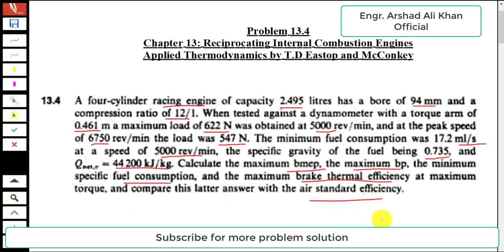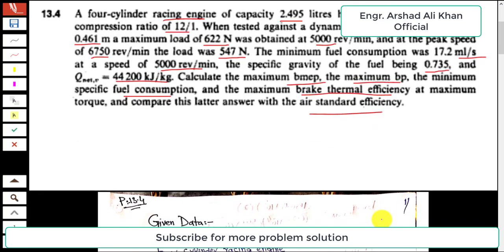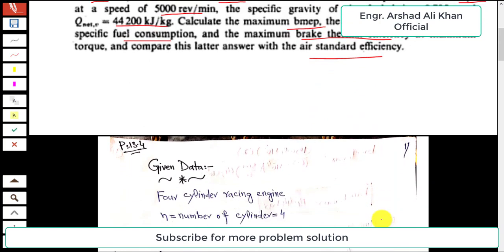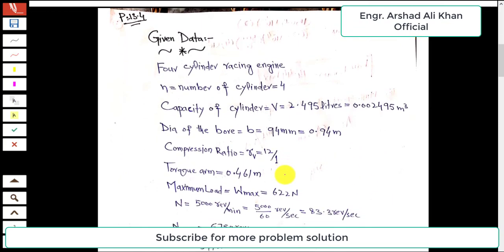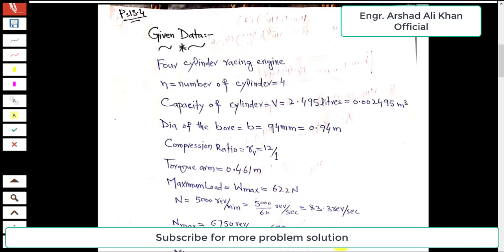Noting the information given: there are four cylinders, and the capacity of the engine is 2.495 liters, which converts to 0.002495 cubic meters. The bore diameter is 94 mm (0.094 m), the compression ratio is 12:1, and the torque arm is 0.461 meter.